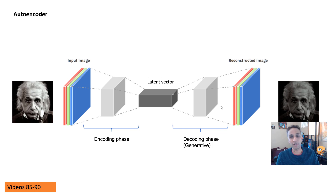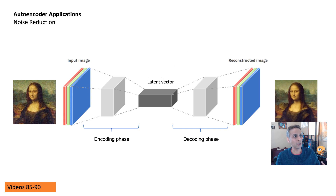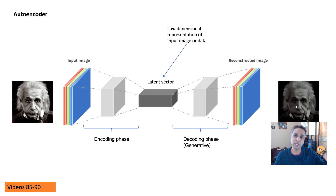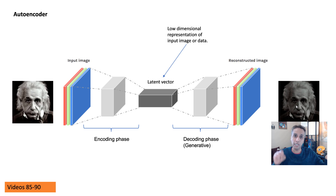But that's not the primary application of autoencoders. One application is noise reduction: instead of training on a clean image as both input and output, your input is a noisy image but your output is a clean image. You're saying, 'my input is Einstein noisy, my output is Einstein clean.' Just update the weights until the reconstruction error is minimal.